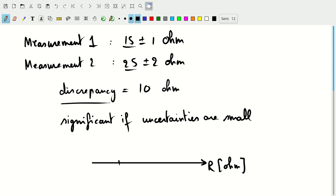So we have our resistance measurement in ohm here. We have our first measurement at 15. So let's do 10, 15, 20, 25, 30. So we have one measurement here with an uncertainty of one, and then we have a measurement here with an uncertainty of two.